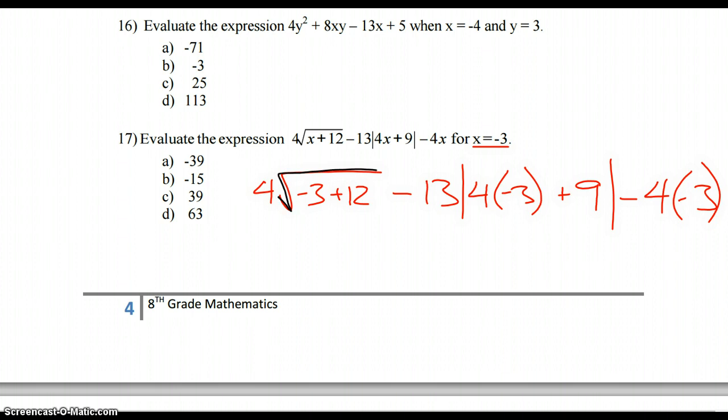We want to take care of the square root first. So 4 times, and we'll take negative 3 plus 12, which is 9. And then the square root of 9 is 3. So I'm going to bring this down to 4 times 3, which is 12.